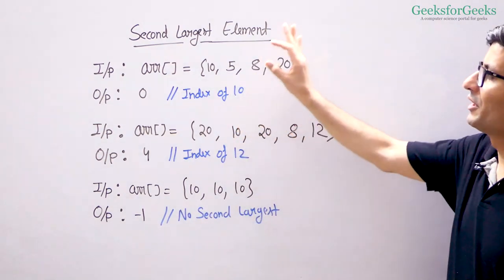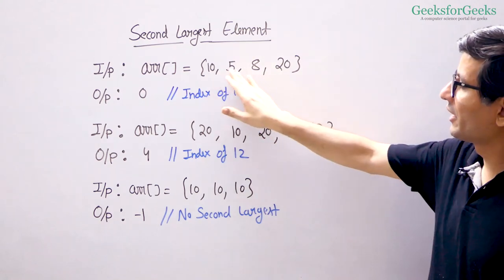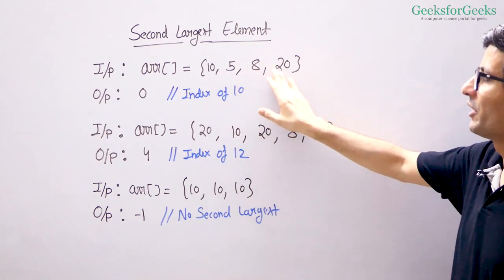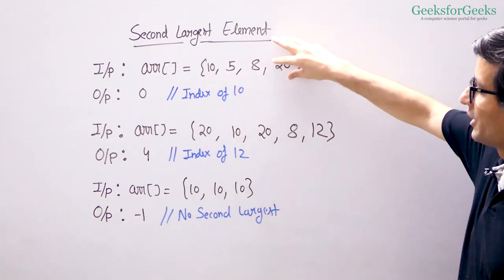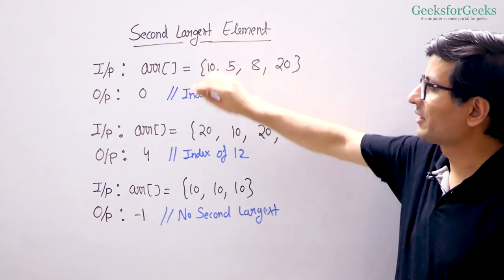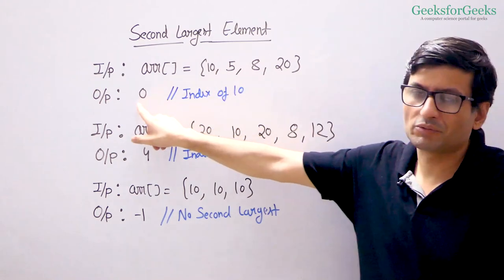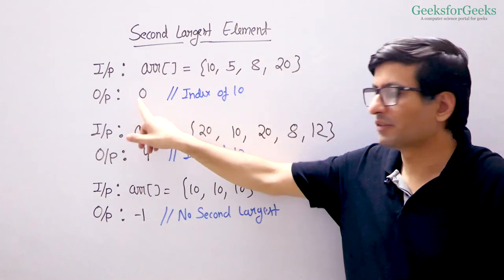Let us understand the problem with these examples. We have this array: 10, 5, 8, 20. The largest element is 20 and the second largest is 10. The index of 10 is 0, so our output is 0.